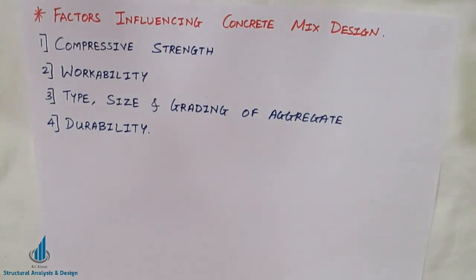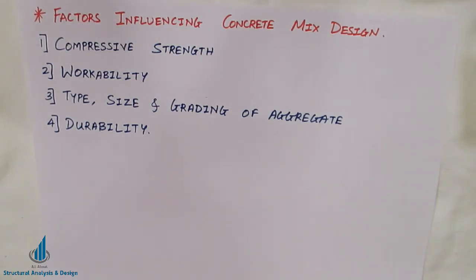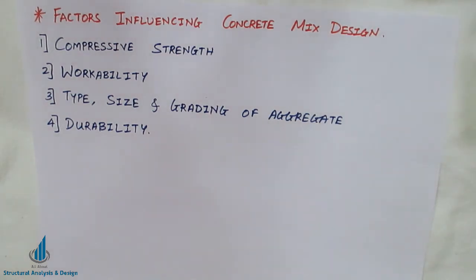The first factor influencing concrete mix design is compressive strength. Concrete is known by its compressive strength — it is the primary requirement of good concrete. Many desirable properties like durability, impermeability, and abrasion resistance are highly influenced by strength. For example, a mix designer designing M30 concrete must achieve 30 N/mm² at the end of 28 days of curing.